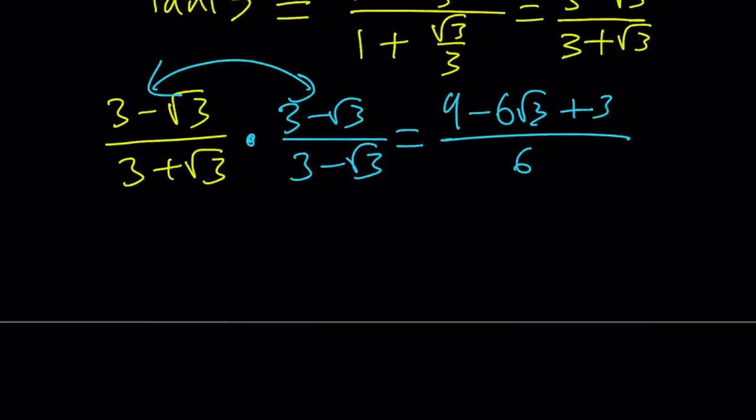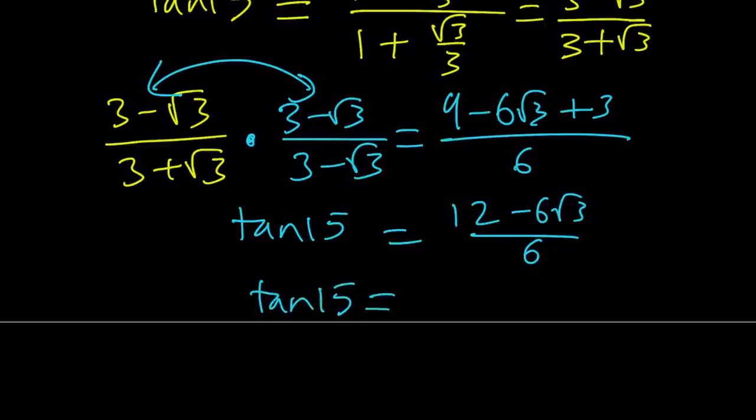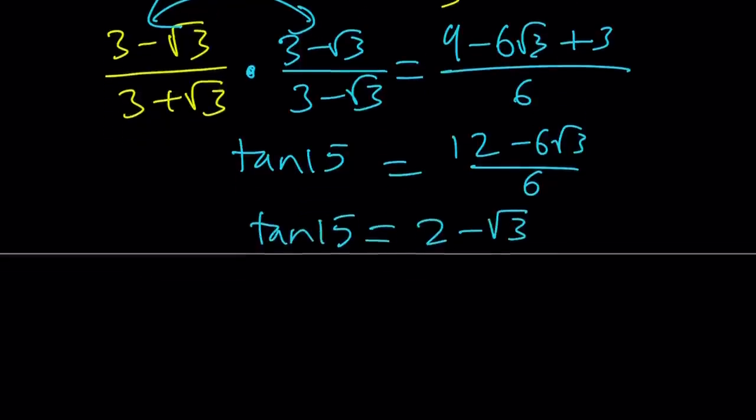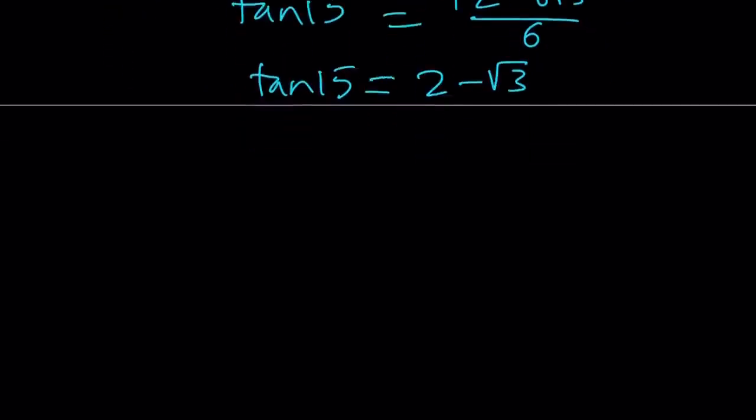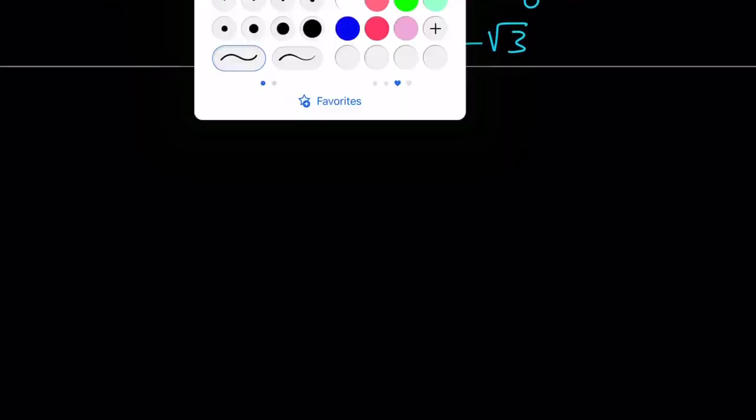9 plus 3 is 12. 12 minus 6 root 3 divided by 6. And this is tangent 15, by the way. It's going to become 2 minus root 3. So, tangent 15 is 2 minus root 3. I was just trying to explain that.